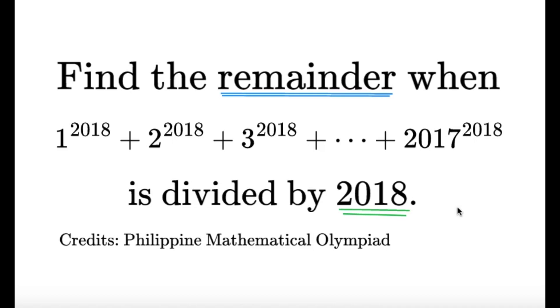As usual, pause this video if you'd like to give this item a try, but if you're done, let us dive into the solution. The very obvious approach is to do modular arithmetic. When we try to use modular arithmetic, it would be very nice if 2018 is a prime number, but in this case it's not. So let's try to use the Chinese remainder theorem to help us solve this item.